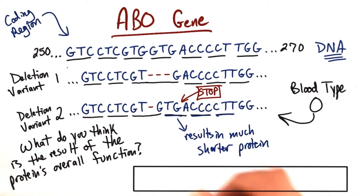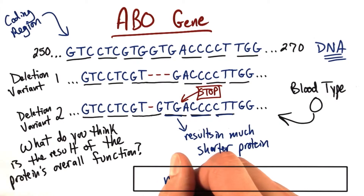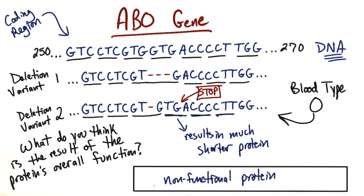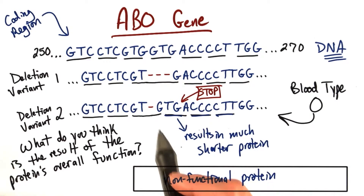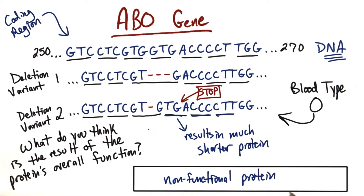We're most likely going to end up with a non-functional protein. At this point, we've deleted like three-quarters of the ABO protein from this single letter change in the DNA code. And as a result, we end up with blood type O.